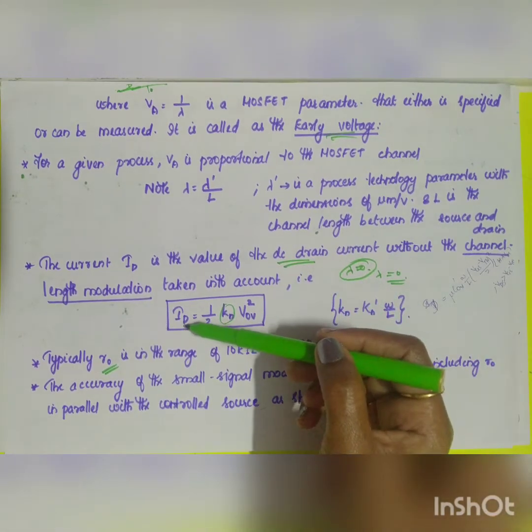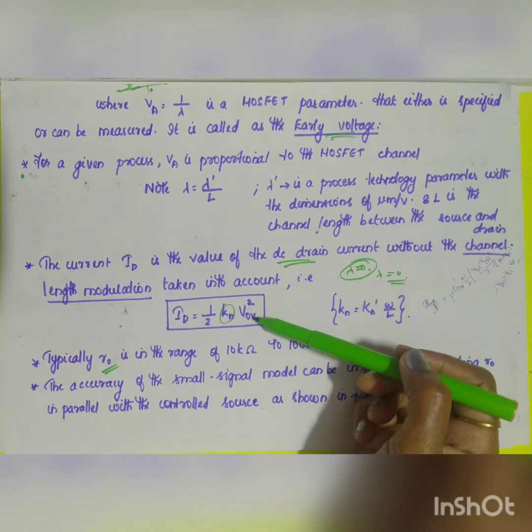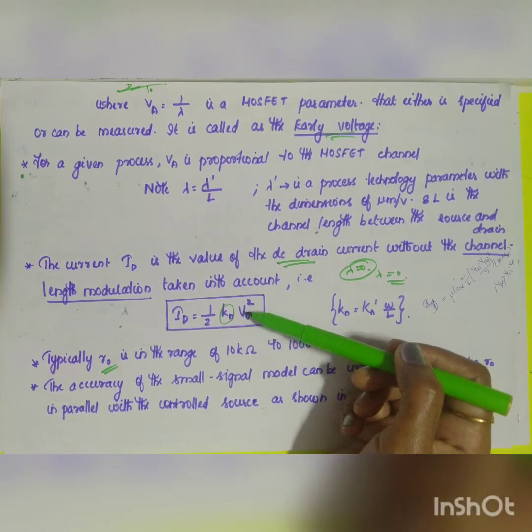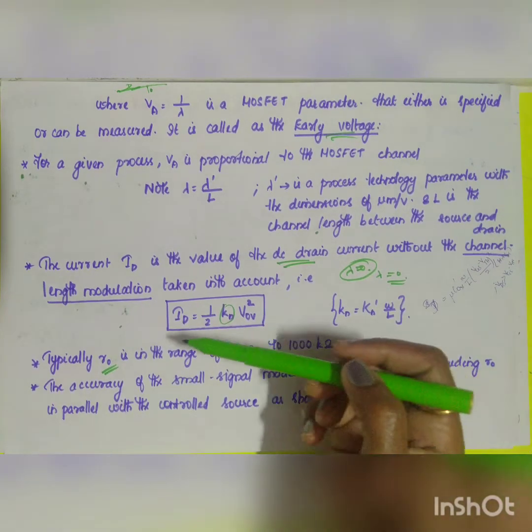What will be your current ID? Current ID will be equal to half into KN into VOV square. What is your KN? KN dash into W by L. And overdrive voltage VOV will be equal to VGS minus VTH.